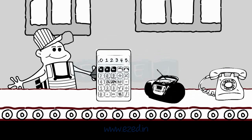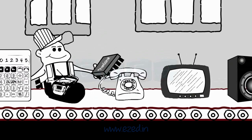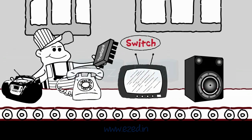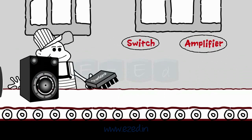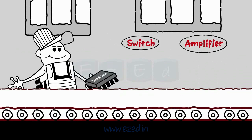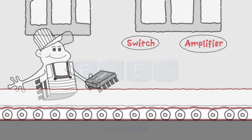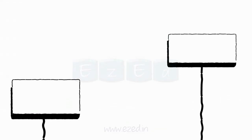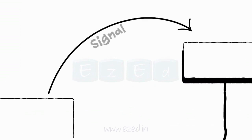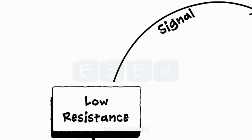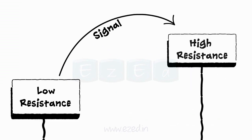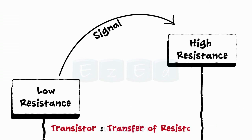Transistor is a very important component that is used as a switch or as an amplifier in almost all electronic gadgets. The amplification is achieved by passing the signal from the region of low resistance to the region of high resistance. Hence, we call it a transistor as a transfer of resistor.